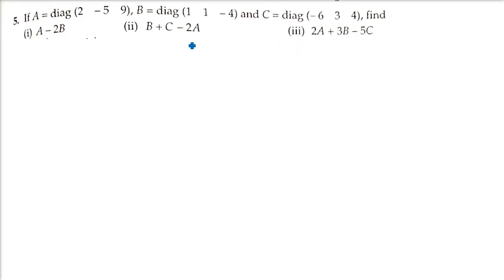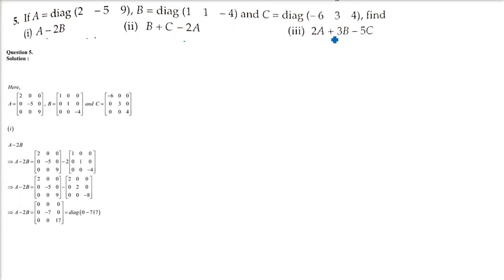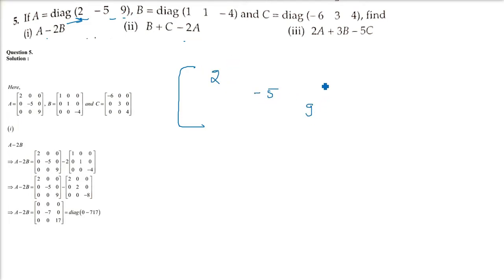I will skip the first and second but do the third one, because it combines elements of both. First, you need to know what 'diag' means — 3 values are given and diag means it is a diagonal matrix with 3 elements in the diagonal and others are 0. So just place 2, minus 5, 9 in the diagonal — this is matrix A. All others are 0. Only diagonal values: 2, minus 5, 9.